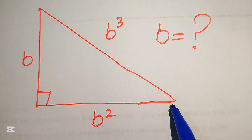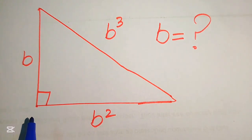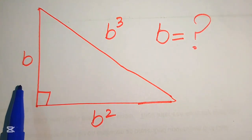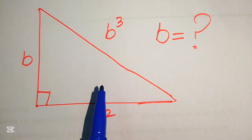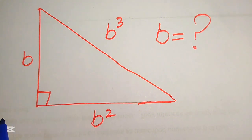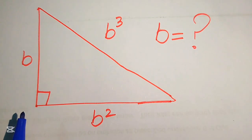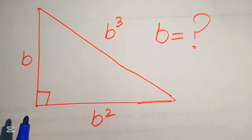Here we have a nice right triangle in which the lengths of its sides are b, b squared, and b cubed, and we solve this triangle for the values of b. Note that this triangle is not drawn to scale.